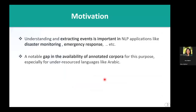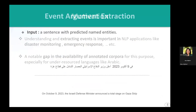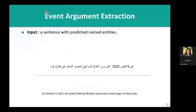The motivation behind conducting this research: understanding and extracting events from text is essential for applications such as disaster monitoring, emergency responses, insurance, decision support, and many more. Despite the importance of Event Argument Extraction, there is a significant gap in the availability of comprehensive annotated corpora specifically for under-resourced languages like Arabic. To bridge this gap, we developed a dedicated Event Argument Extraction Corpus and model for Arabic.